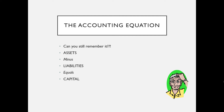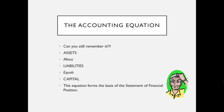Capital is the amount the owner has invested in the business. Capital will increase by any profit the business makes, or be reduced by any loss. Drawings will also reduce the owner's capital. This equation forms the basis of our statement of financial position.